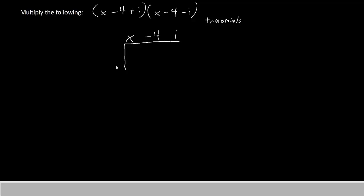And along the left side, I write the other terms in the second trinomial: x, negative 4, negative i. And then I simply multiply each term on the left by each term above. Let's see how that works.